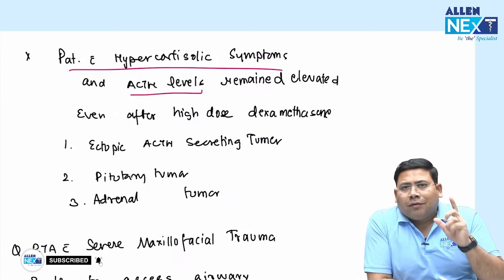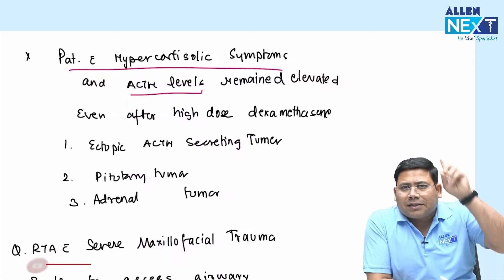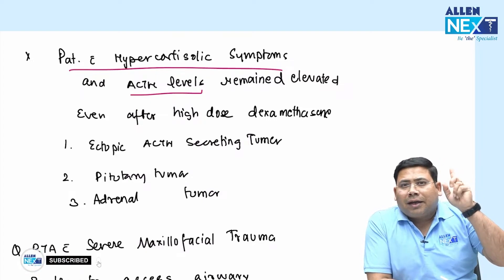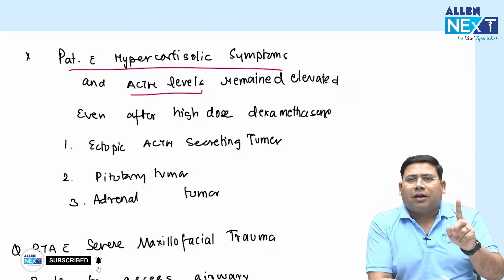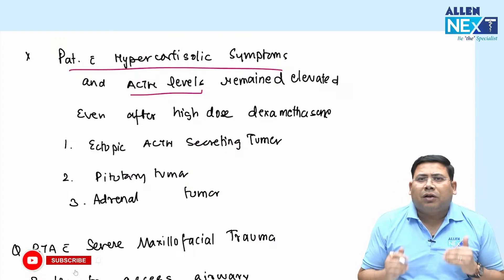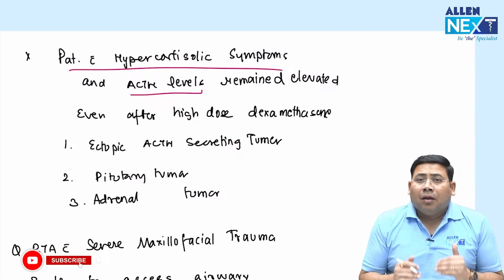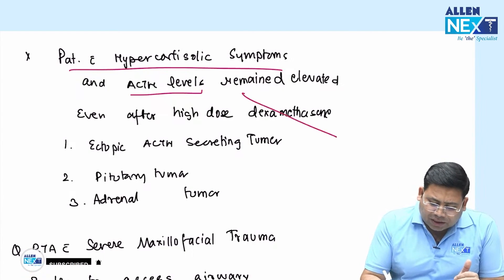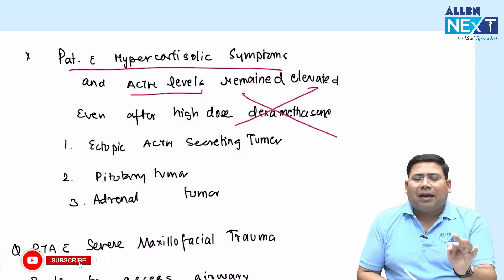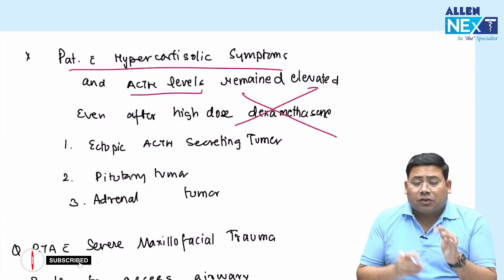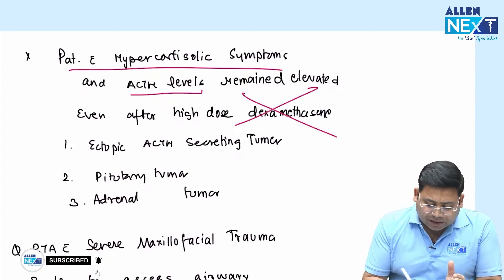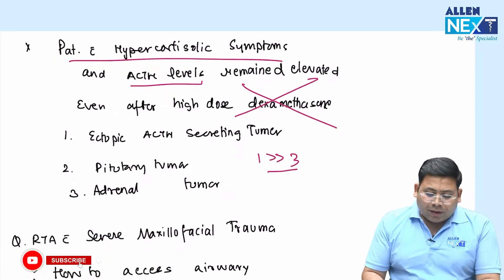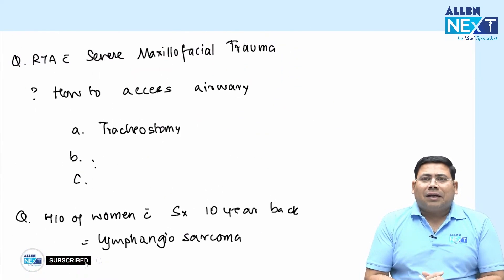A patient with hypercortisolism symptoms and elevated ACTH: the majority of such cases are Cushing's disease from pituitary or central origin, which would respond to dexamethasone suppression. If dexamethasone suppression fails, this is ectopic ACTH from an ACTH-producing tumor. That is the best answer here.